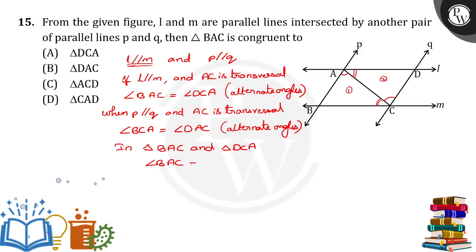Angle BAC is equal to angle DCA, AC is equal to AC, a common side, and angle BCA is equal to angle DAC. So from ASA congruency...